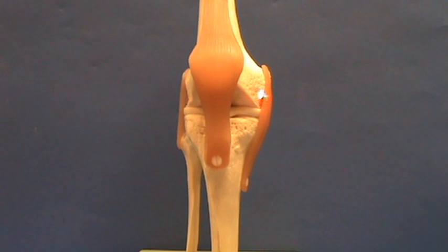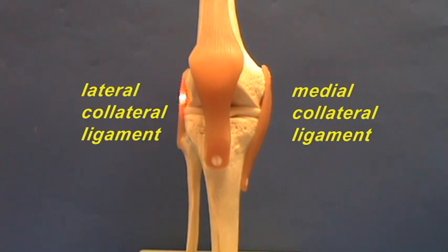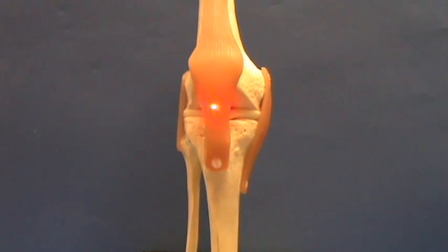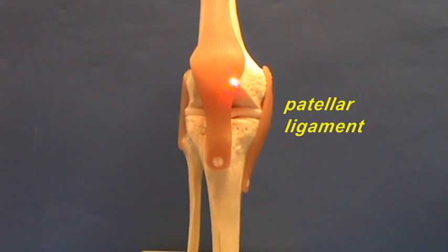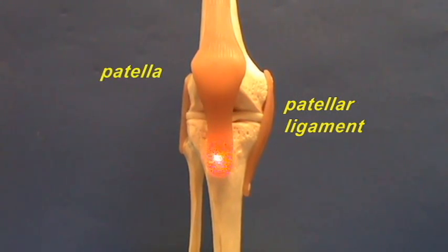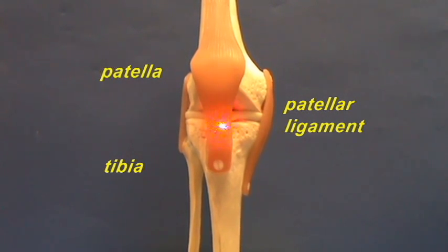This is the medial condyle and the lateral condyle of the femur. On the sides we have the collateral ligaments. On the medial side we have the medial collateral ligament, and on the lateral side we have the lateral collateral ligament. This is the patellar ligament. The patellar ligament connects the kneecap or the patella with the tibia at the tibial tuberosity. This is connecting bone with bone, so this is a ligament — it's not a tendon.